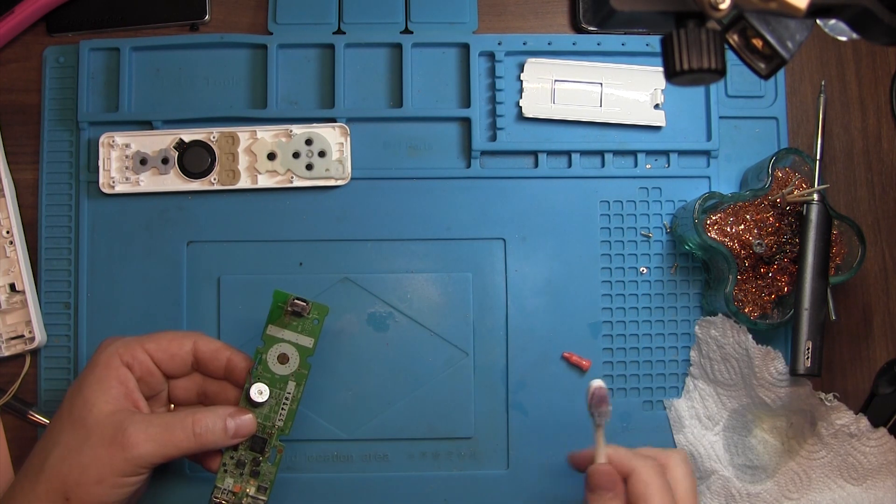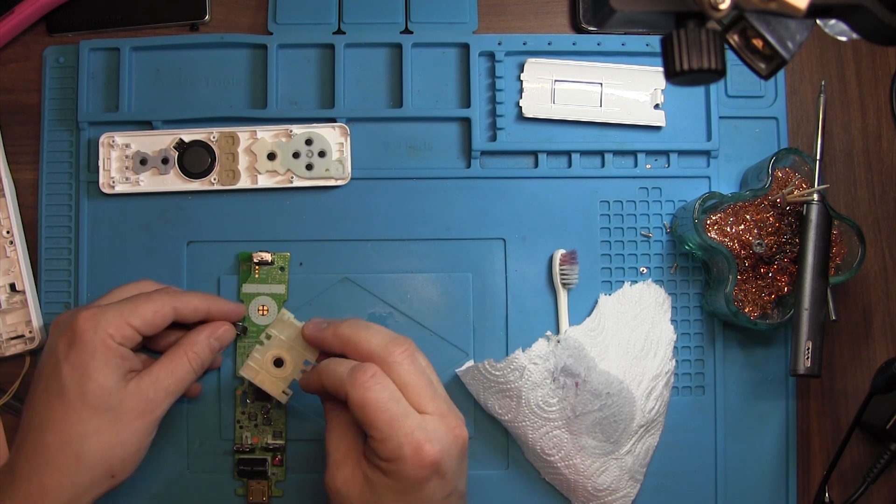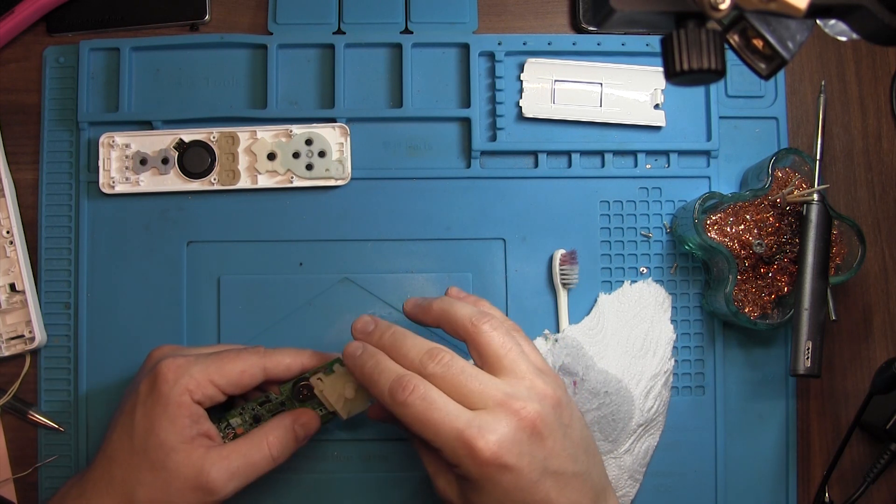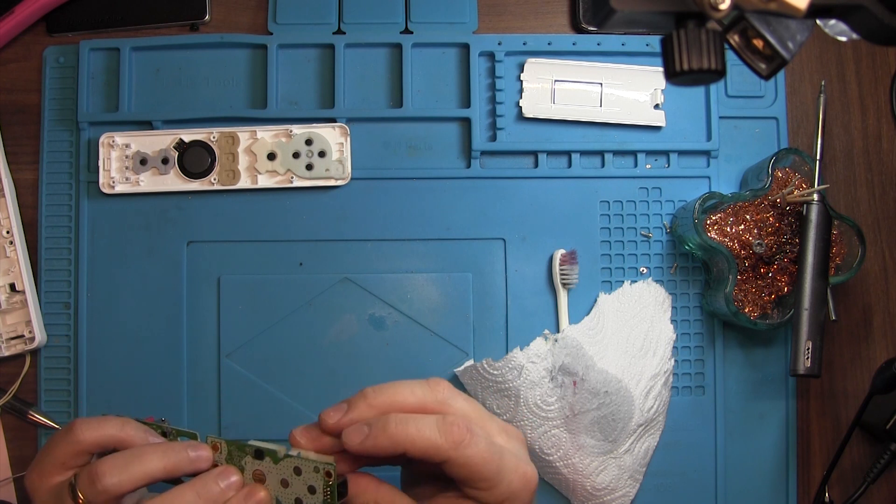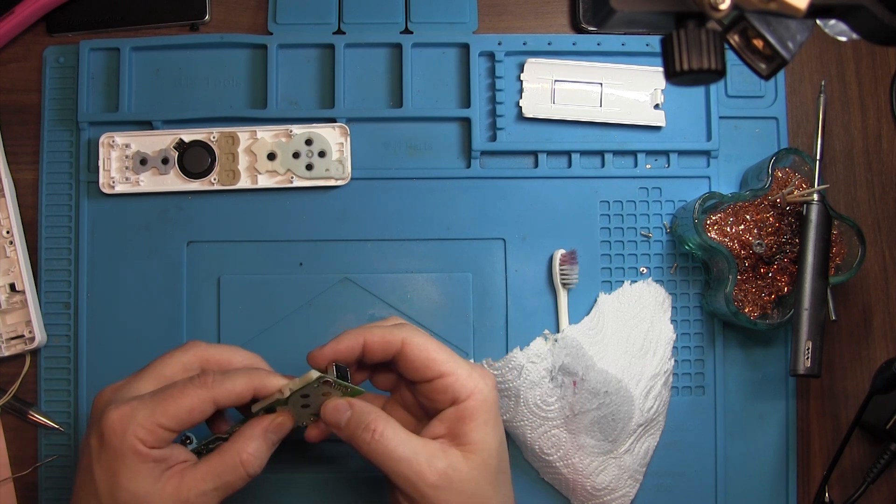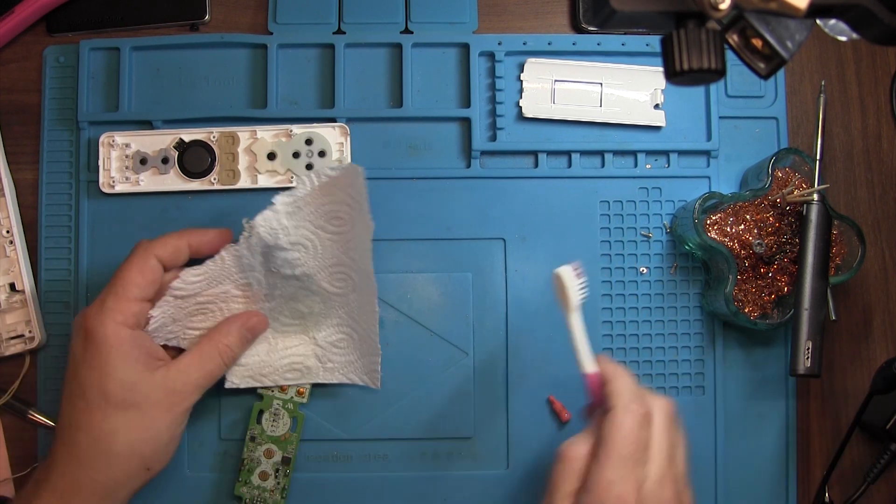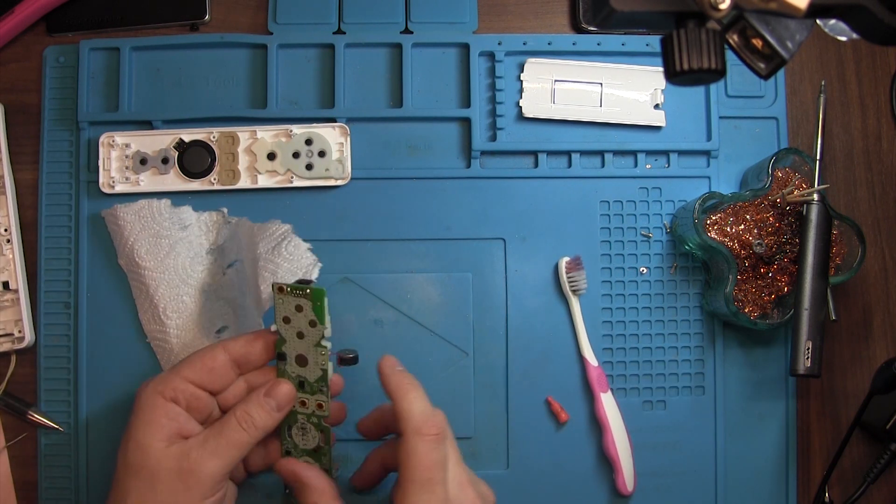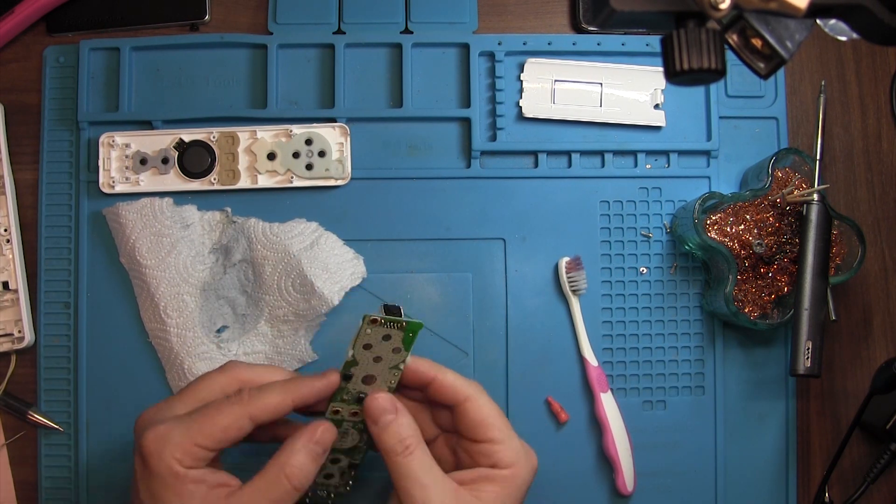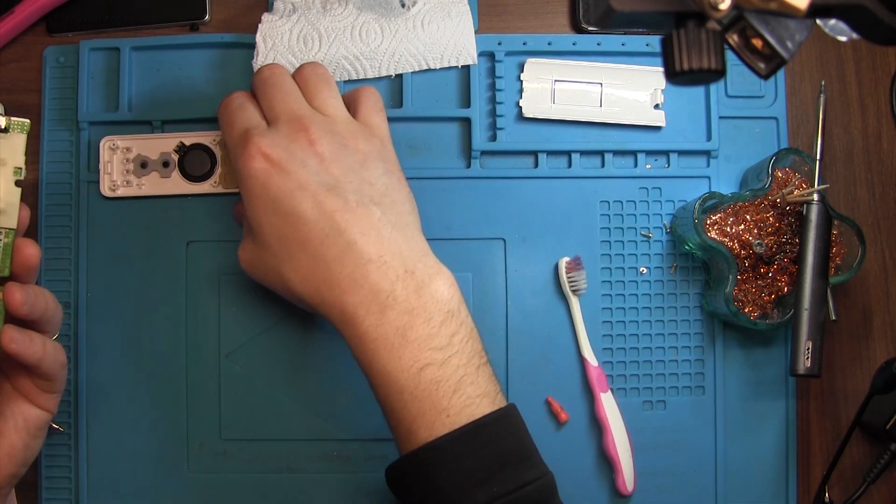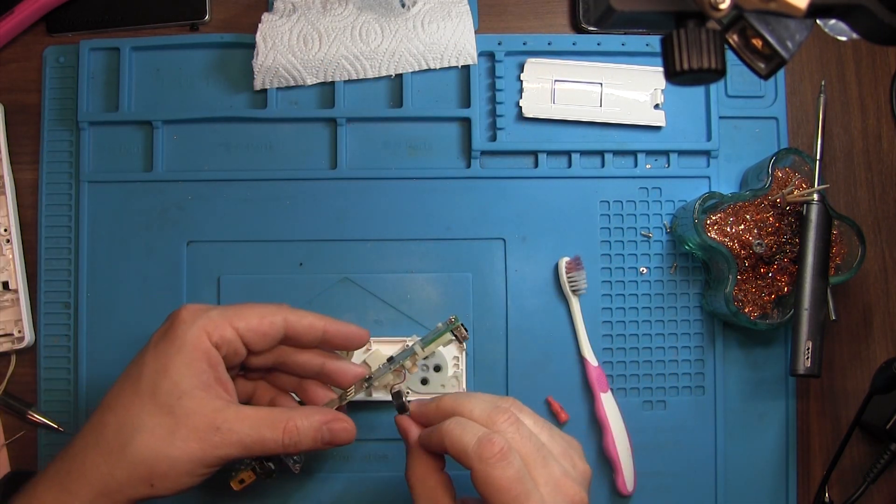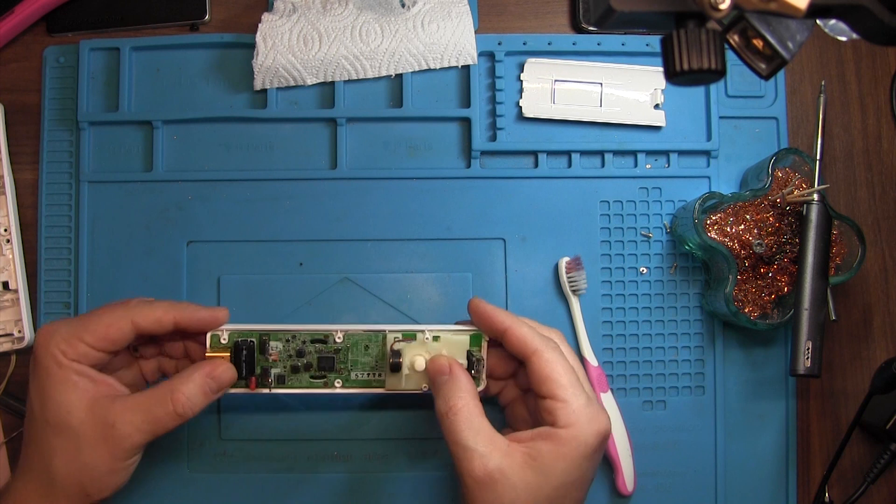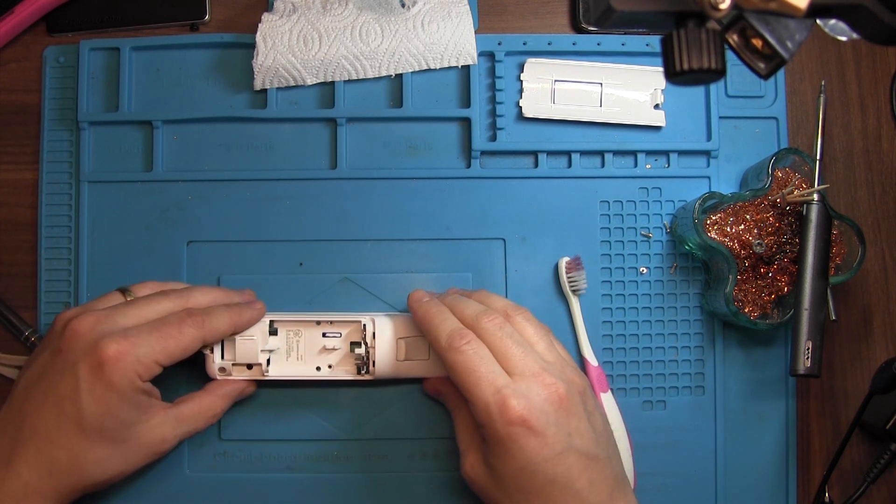Also when you're cleaning up flux you can use a piece of paper, a towel or something like that so it sucks up the flux when the alcohol dissolves it. Put in the back the button. There's actually an alignment pin there that aligns it to the correct position and the hooks on the sides clip the plastic to the PCB. Now let's reassemble the remote again so that we can test that our repair worked.